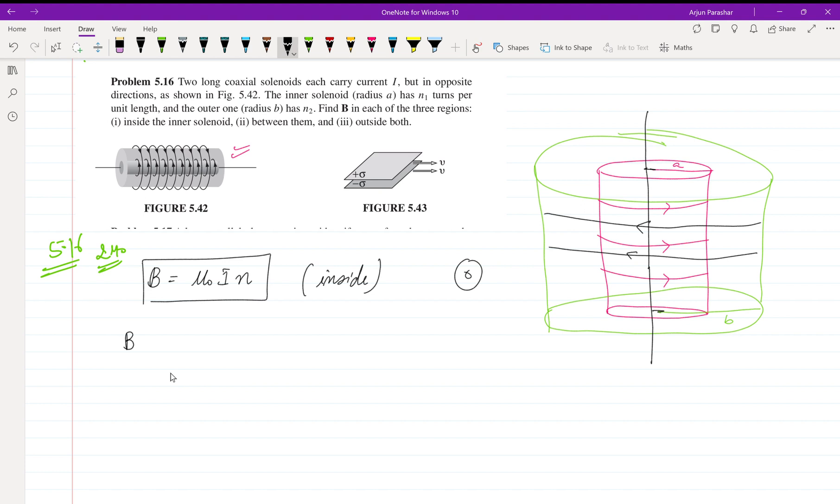If you pick up a point inside the inner solenoid, it is inside both of these solenoids, so the magnetic field of both will count: μ₀n₂I and μ₀n₁I. Suppose n₂ is greater than n₁, though it's not given in the question.